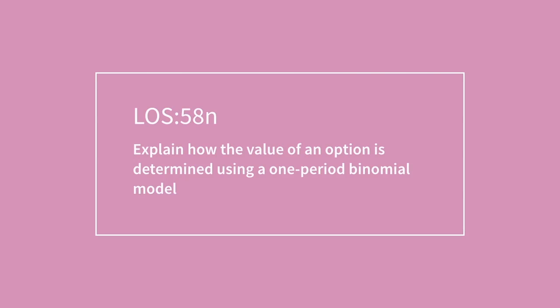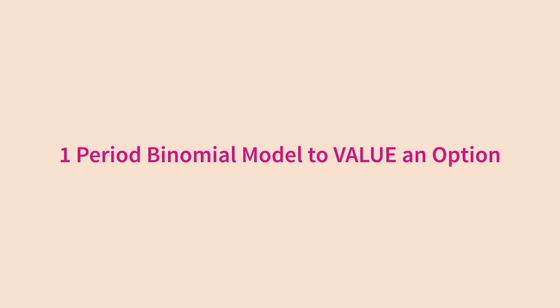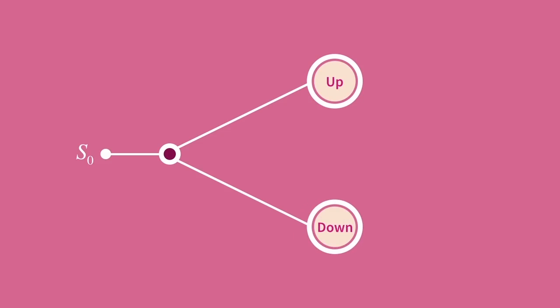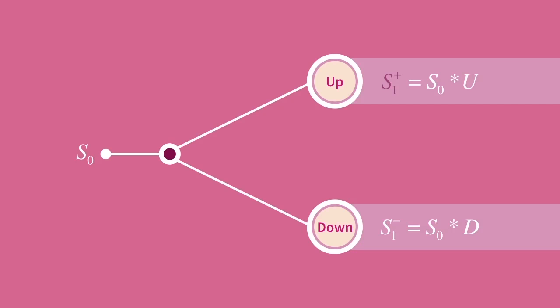In this section we're going to use a one-period binomial model to determine the value of an option. We have a starting point of S0, the underlying price at time zero, and two possibilities for S1: either S1+, meaning the price has gone up by the up-factor amount, or S1-, meaning the price has gone down by the down-factor amount. Note the reciprocal relationship between the up-factor and the down-factor. The price must be either S1+, which is above the strike price, or S1-, which is below the strike price.